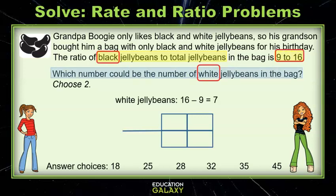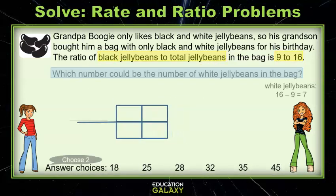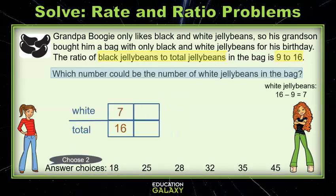The ratio they give you is 9 to 16, but that's black jelly beans to total and the question asked about white jelly beans. So you need to subtract. 16 minus 9 is 7. The ratio of white jelly beans to total is 7 to 16.